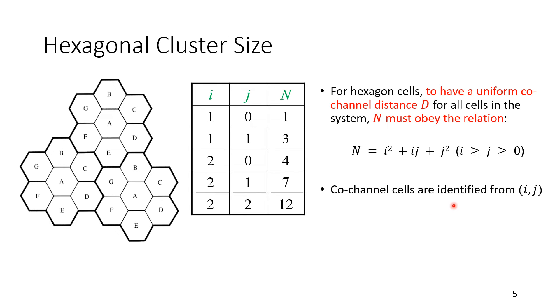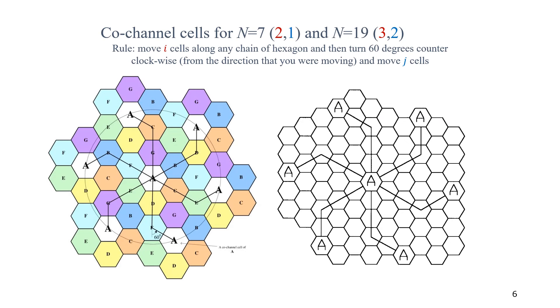So let's move to the next slide and see how co-channel cells are identified from i j. We have two examples here. The first, the one on the left, shown with colors, is capital N equal to 7, where we substituted i and j equal to 2 and 1. On the right-hand side, we have capital N equal to 19. We got this by having i and j equal to 3 and 2. So the point here, we would like to know how do we find the co-channel interference if they are not numbered, if they are not tagged here. But what if they are not labeled? The rule says, move i cells along any chain of hexagon, and then turn 60 degrees counterclockwise from the direction that you are moving in, and then move j cells, and that will take you to the co-channel interfering cell.